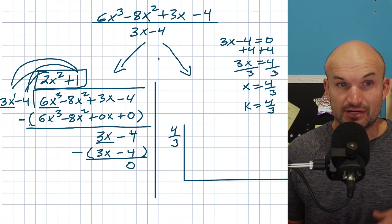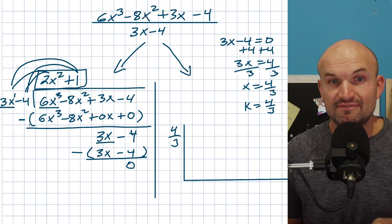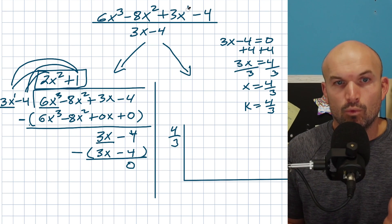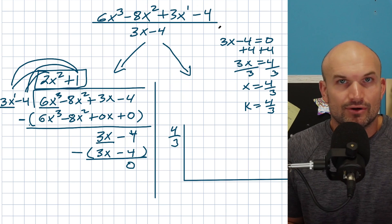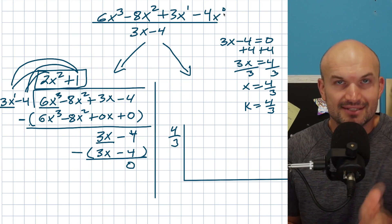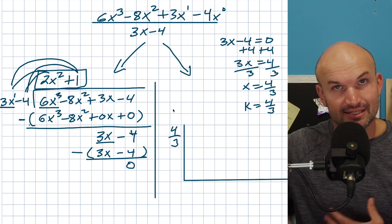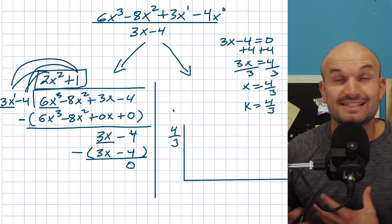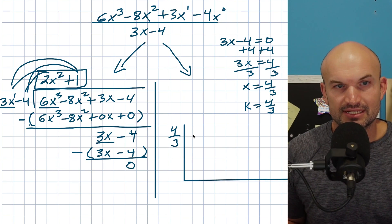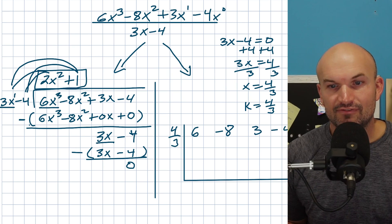The next thing we need is the coefficients of the dividend. It's very important that if you have any missing terms, you use 0 as the coefficient. In this case we have 6, negative 8, 3, and negative 4 — we have all terms down to x⁰ with none missing, so we're good. But if you had a missing exponent, make sure to use 0 as that coefficient.